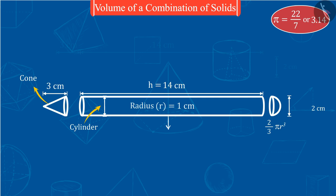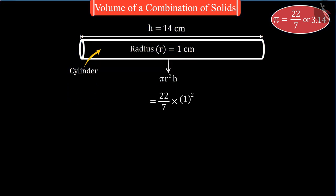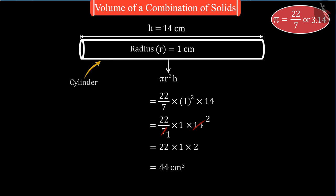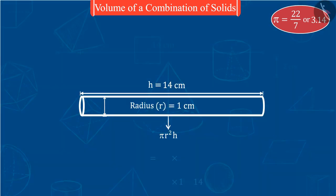Now, for cylinder, on putting the values of pi, r, and h and solving, we get 44 cubic centimeters.